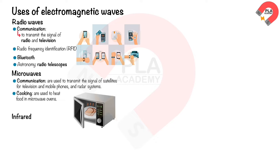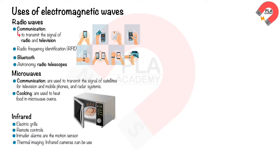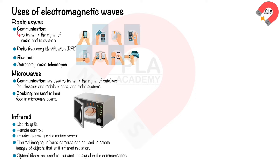Infrared is emitted by warm objects. Some electric grills use infrared heat to cook food. Remote controls use infrared light to send signals to devices such as TVs. Intruder alarms act as motion sensors using infrared. Infrared cameras can be used for thermal imaging in medical imaging, security, and industrial applications. Optical fibers are used to transmit signals in communications more efficiently than visible light.